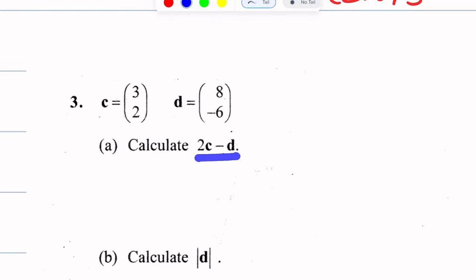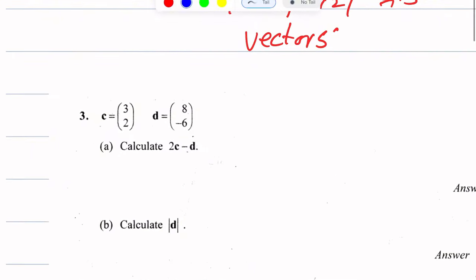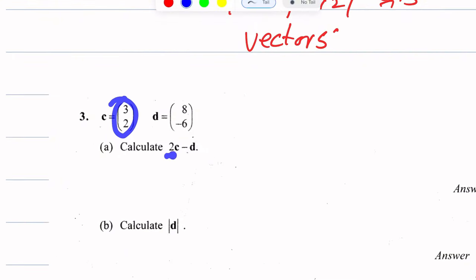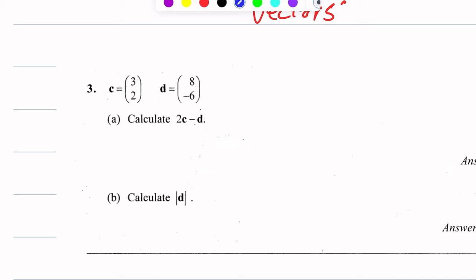Calculate 2c - d. We need to multiply vector c by 2 and subtract vector d. This becomes 2 times c vector (3, 2) minus d vector (8, -6).